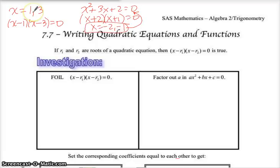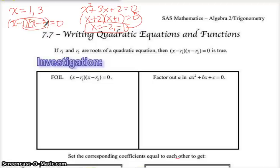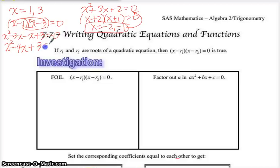First I give you the answers, or the zeros, or the solutions, or the roots. I put them in parentheses in factored form, and then I FOIL this. I would get x squared minus 3x minus 1x plus 3 equals 0, which is x squared minus 4x plus 3 equals 0. And that's my quadratic equation, which leads me to get these roots.